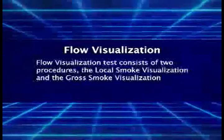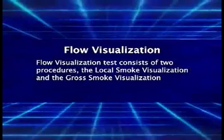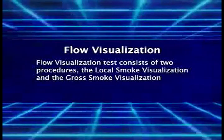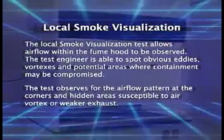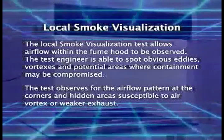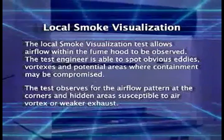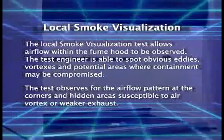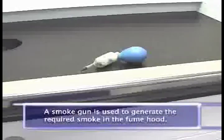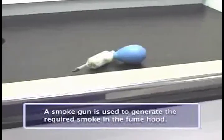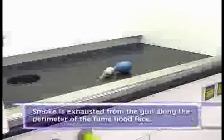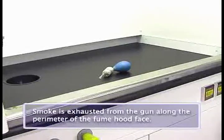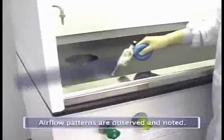Flow visualization tests consist of two procedures: local smoke visualization and gross smoke visualization tests. In the local smoke visualization test, the fume hood is observed as it is typically used. Areas that are susceptible to air vortex or weaker exhausting, such as the corners, are closely observed during the procedure. A smoke gun is used to generate smoke along the perimeter of the fume hood face, and all airflow patterns are observed and carefully noted.